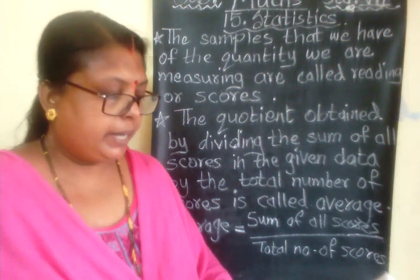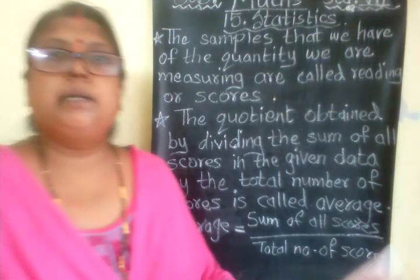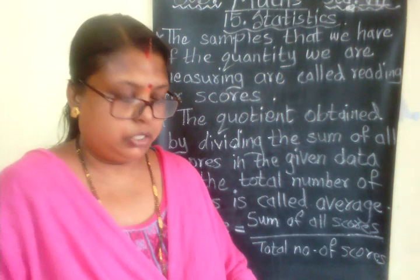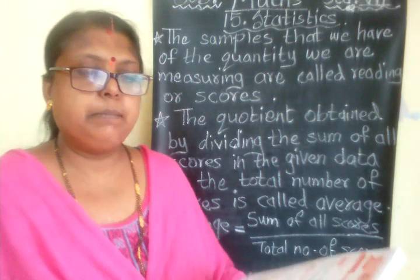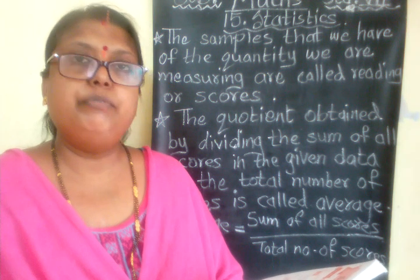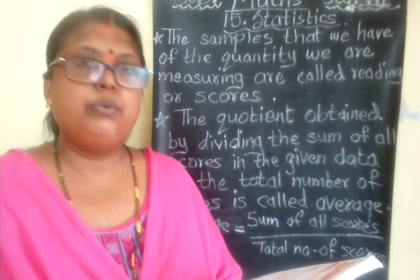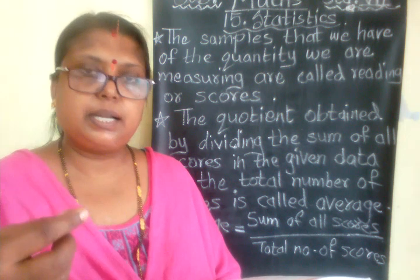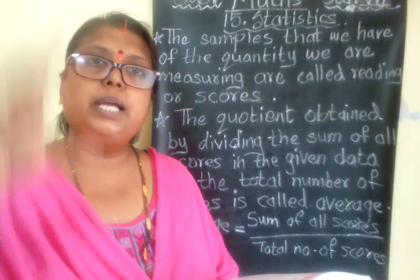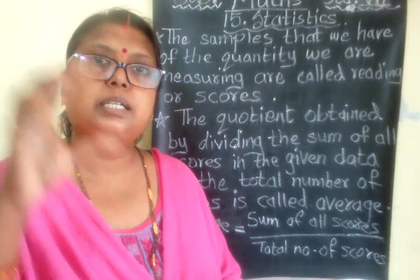Average is used to find the approximate value of scores given in data. Now, the first question in Practice Set 54: the daily rainfall for each day of a week in a certain city is given in millimeters. Find the average rainfall during the week. In a week there are seven days, and each day's rainfall is given in millimeters. We have to find the average rainfall of that region.